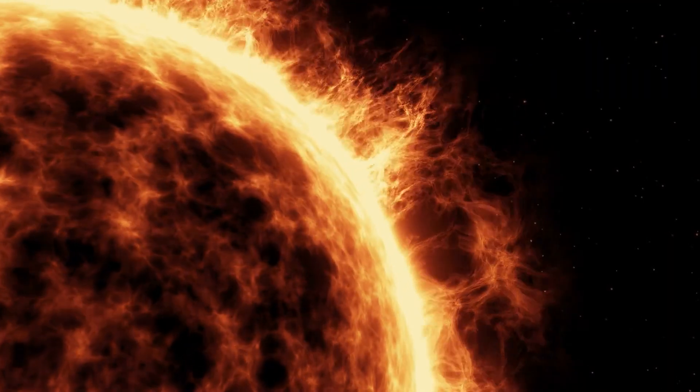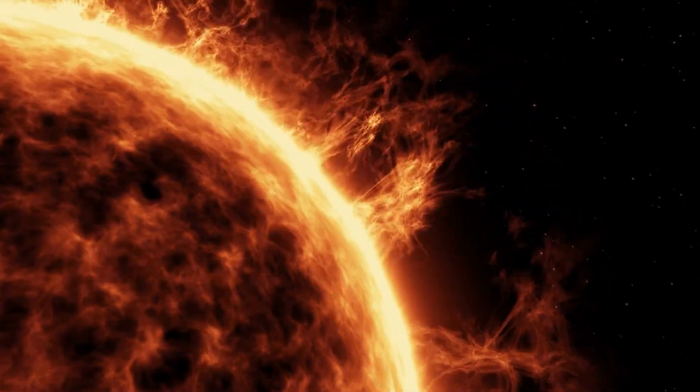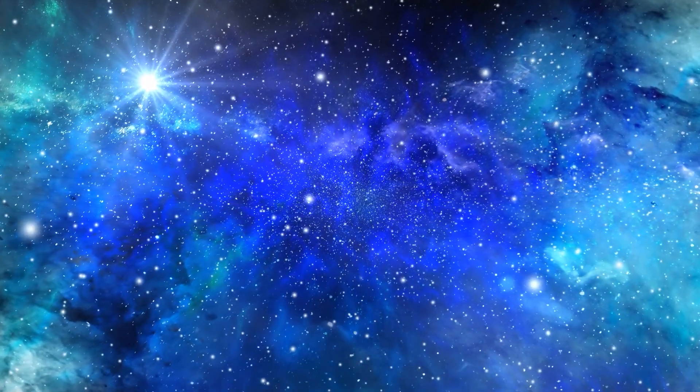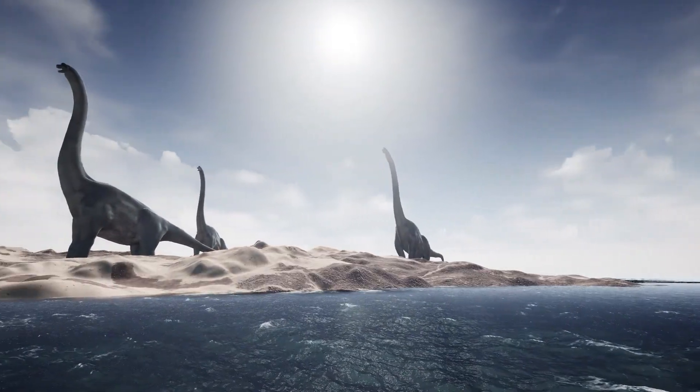By that time, our sun will have already evolved into a red giant, rendering our solar system uninhabitable. If any descendants of our species or other lifeforms exist billions of years from now, they will have evolved significantly and be distant from us in evolutionary history.